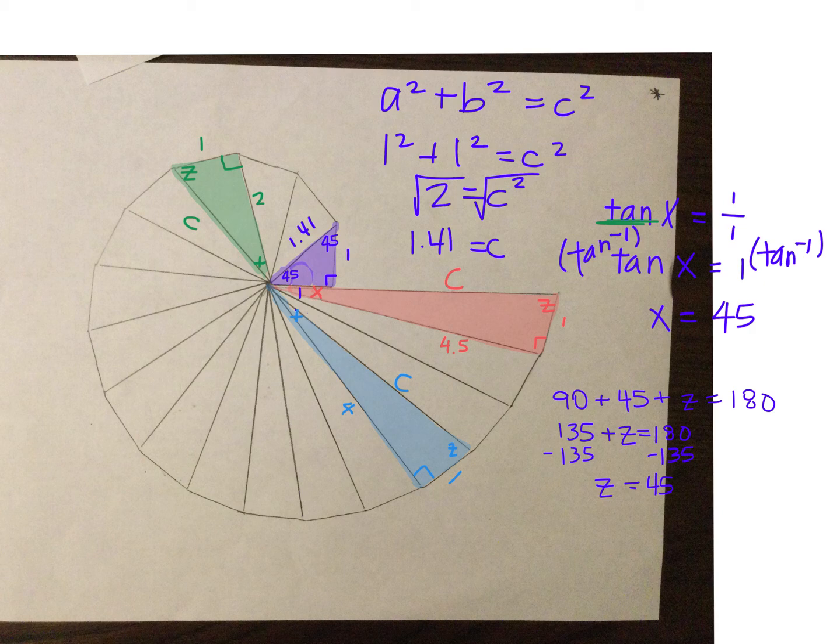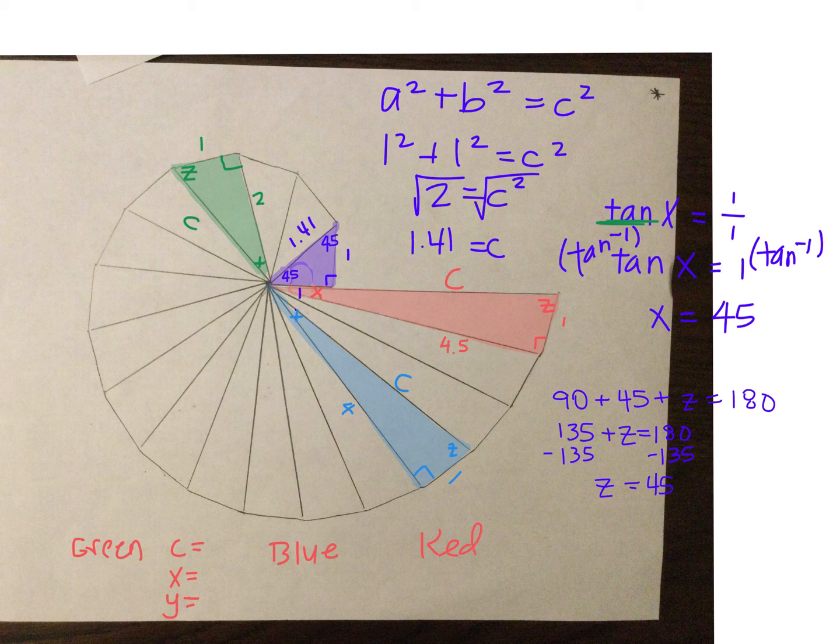And somewhere on the paper, you can write green, and you'll have C equals whatever, X equals whatever, Y equals whatever. You'll have the same for blue and the same for red. So that's the problems I need you to solve.